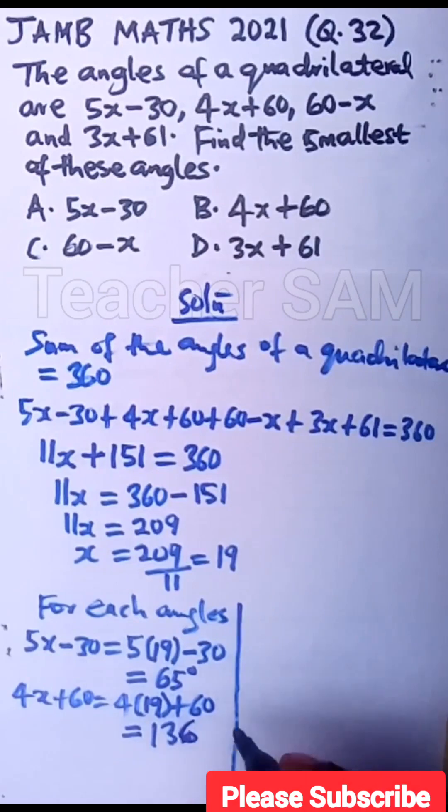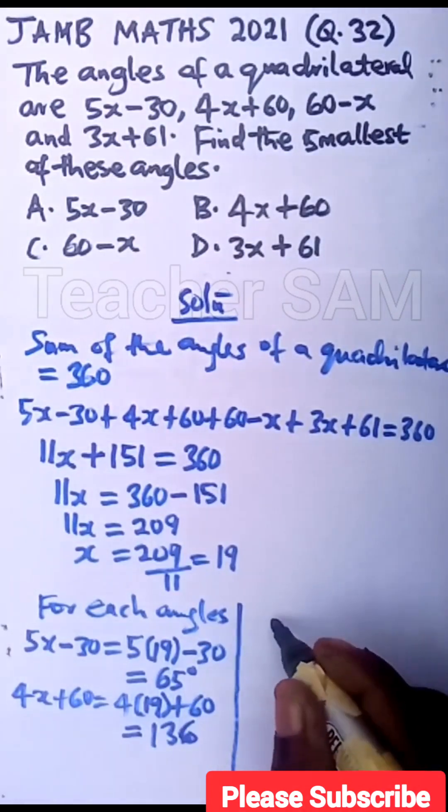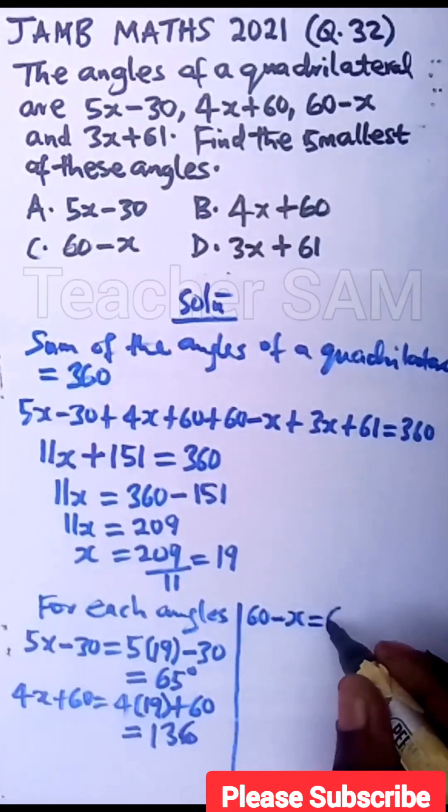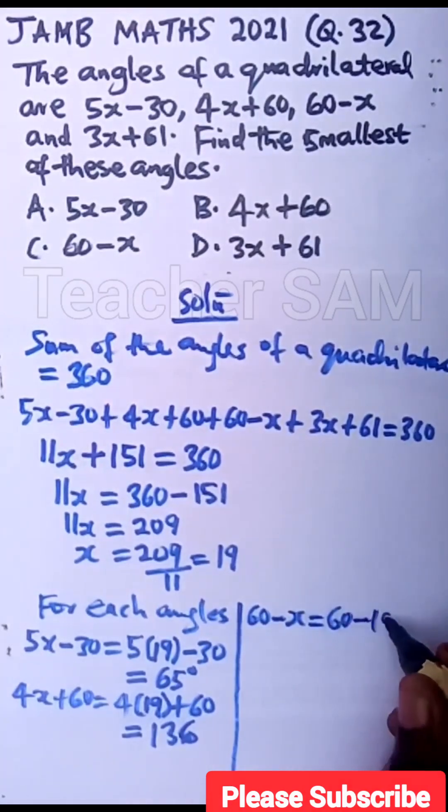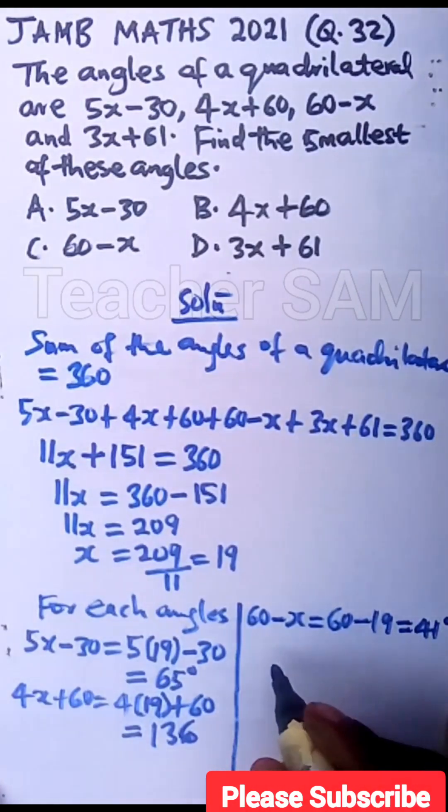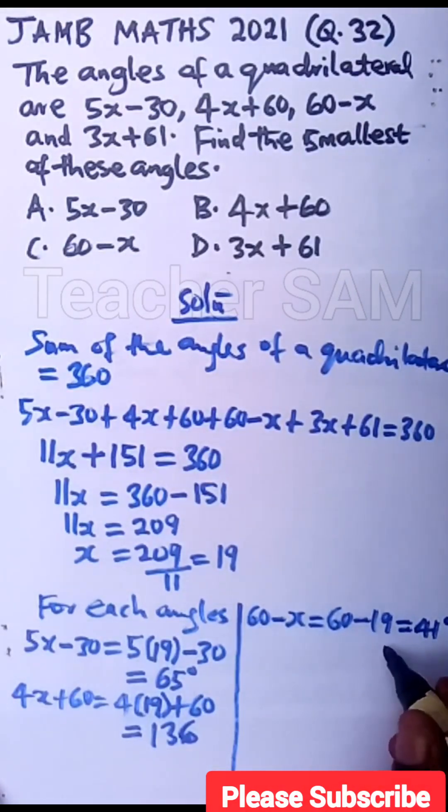Let's move to the next one. From 136 to the next one now, we have 60 minus x. Substitute that, that will be 60 minus 19. When you do that correctly, you have 41 degrees. You have 41 degrees here. Now let's move to the next one. Let me rewrite this, 41 degrees so that you see it clearly.